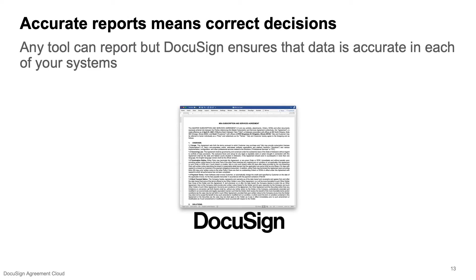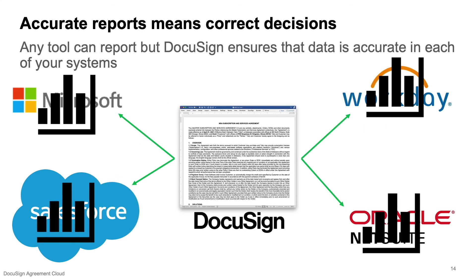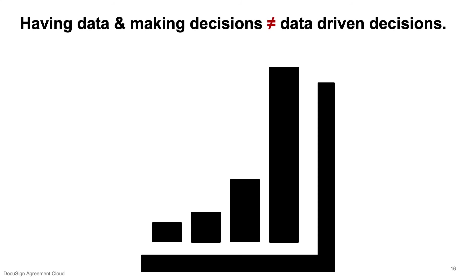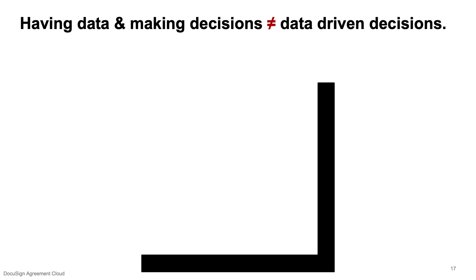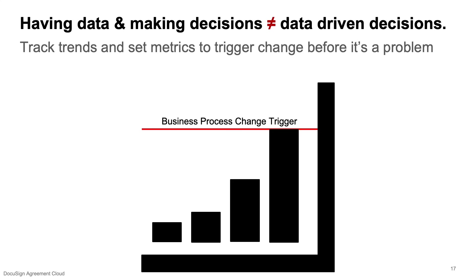At the end of the day, every company has data and tools to report on, which is very different from what you really need — it's accurate data. DocuSign ensures that your data is accurate across your business processes and across your different systems, so you can set metrics to drive your decisions from accurate information. Now your entire company is on the same page with accurate reporting in each of their respective systems, because you may have data today that you're making decisions off of, which is very different from data-driven decisions. With the ability to identify problems or trends from your respective systems before they happen, you can set triggers — not find out why after the fact.